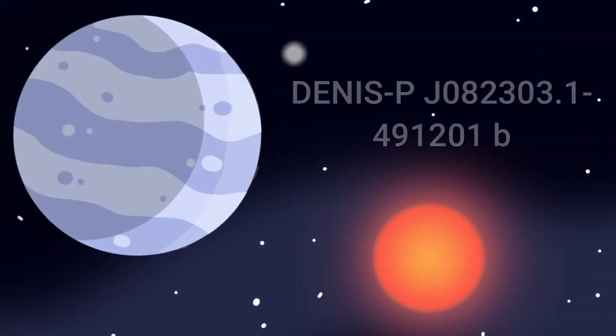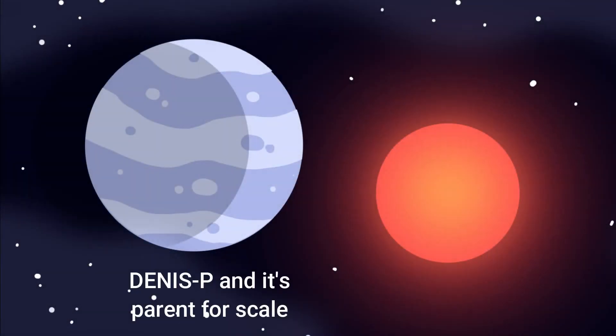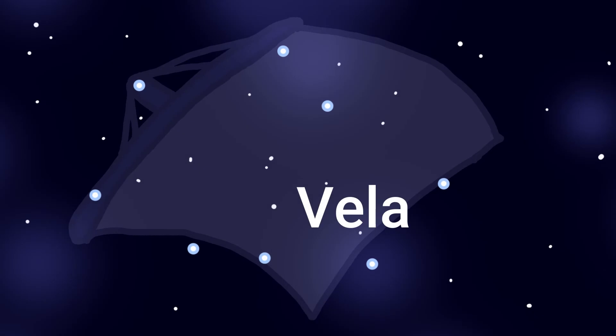DENIS-P J082303.1491201b is an exoplanet or brown dwarf that orbits an L1.5 type brown dwarf in the constellation Vela. It was discovered in 2013.